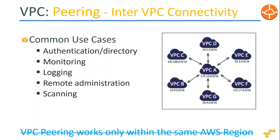Until recently, VPCs only paired within the same region — if you were in Virginia, you could only pair VPCs within that region. Amazon changed this and introduced inter-region VPC peering, making it possible to communicate between regions like Virginia and Ireland. It is not available in all regions, but a few regions support inter-region VPC peering today.